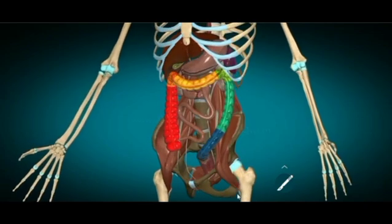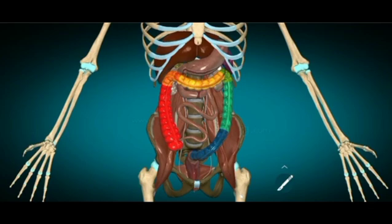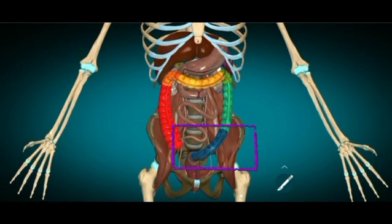After the descending colon, you've got the sigmoid colon, the most distal part of the large intestine. It begins at the pelvic inlet where it's a continuation of the descending colon.